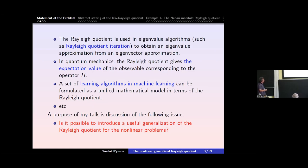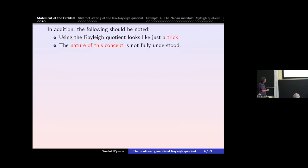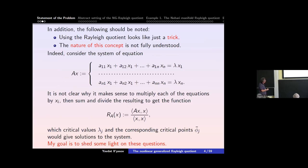The purpose of my talk is to discuss the following question: Is it possible to introduce a useful generalization of the Rayleigh quotient to nonlinear problems? Using the Rayleigh quotient looks like just a trick, and the matter of this concept is not fully understood. Indeed, consider a system of equations. Assume that we see this equation for the first time and try to solve it. Then it is not clear why it makes sense to multiply each equation by x_i, sum, and divide — and why the resulting functional's critical values and critical points give a solution of this system. My goal is to shed some light on this question.